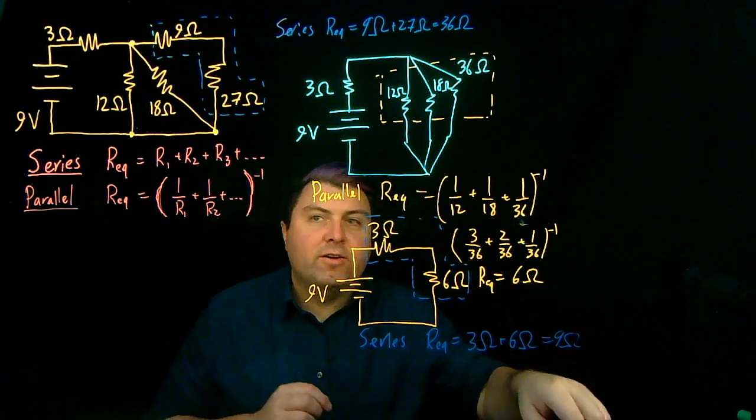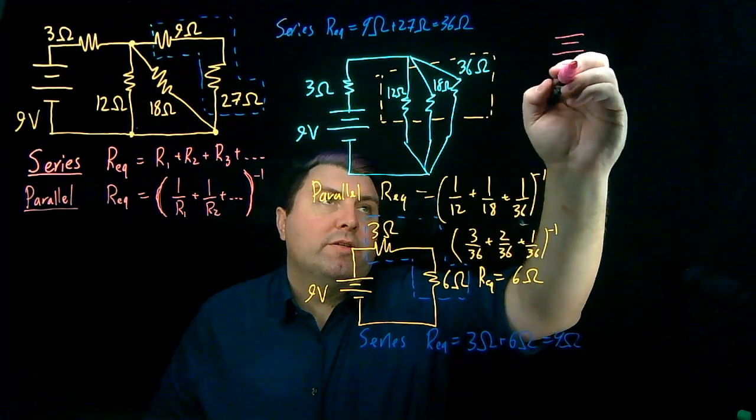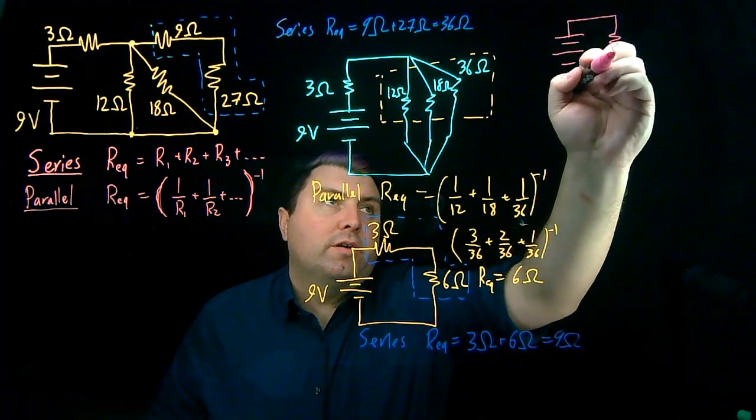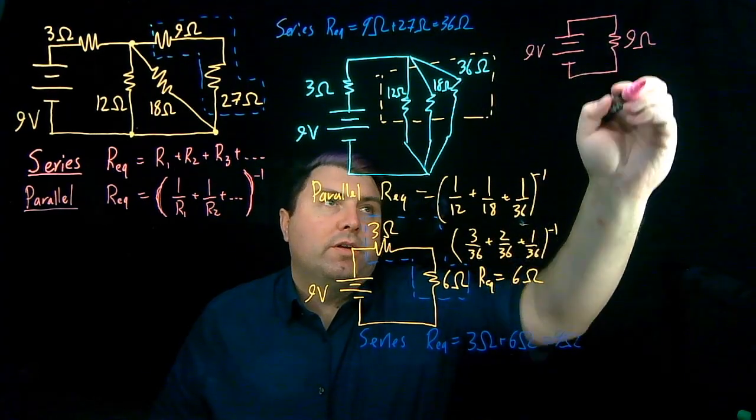And so we have for ourselves, at last, just a very simple one battery, one resistor circuit. 9 volts, 9 ohms.